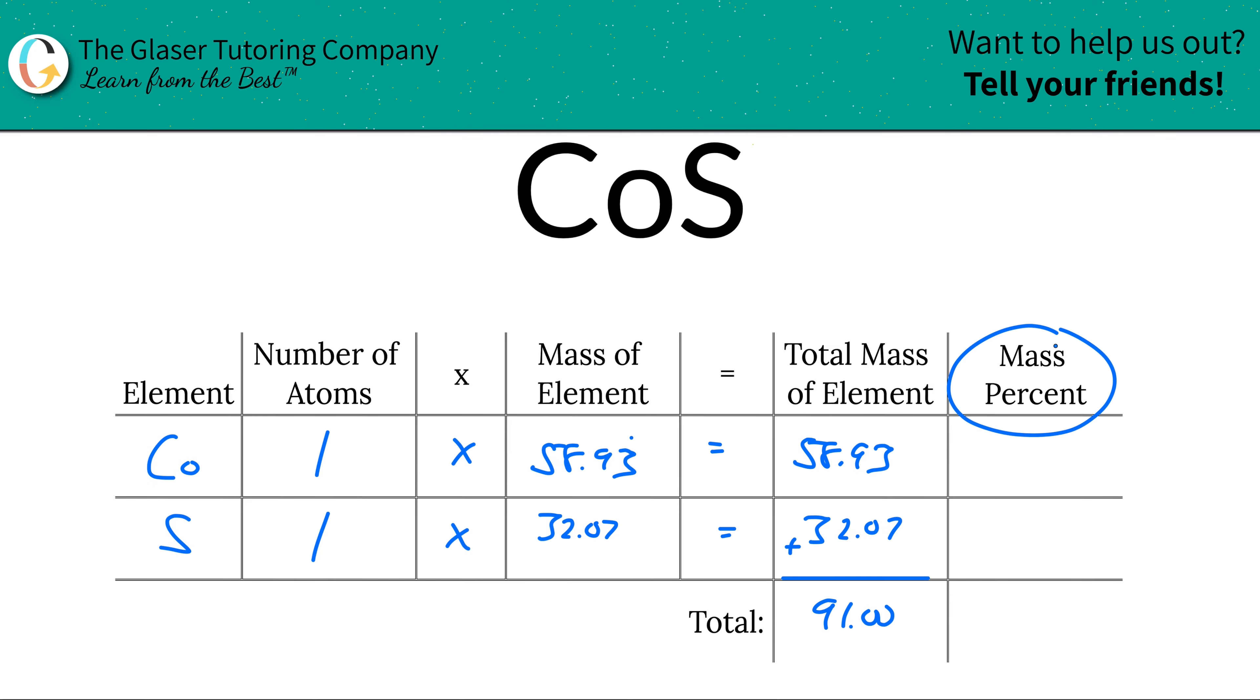So all we need to do to find the mass percent of cobalt is to take the total mass of that cobalt, the 58.93, and simply divide it by the total mass of the entire compound, the 91. That's why we had to do that first. And then just multiply it by 100. This is a simple percent calculation. Part over whole times 100. Easy peasy. So now all we're going to do is calculate that. So this will work out to be about 64.